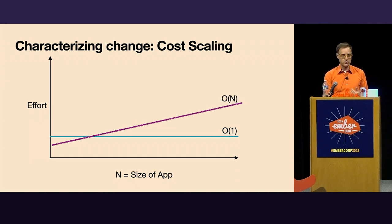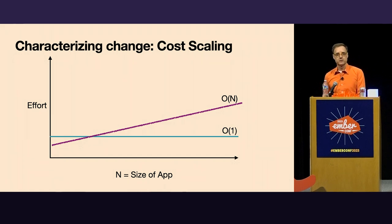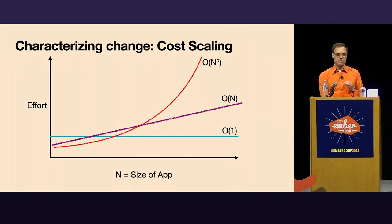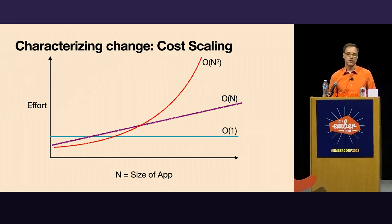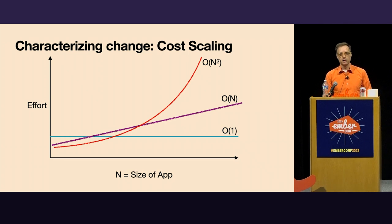But a lot of changes cost more than that and don't scale at constant — they scale linearly. This is the kind of change where if you have a big application full of Ember components and want to change them all to Glimmer components, your cost scales with your application. And there's a worse kind of change: if the change causes subtle differences in interactions between components or between different parts of the system, your cost can go super-linear — N squared or worse. These changes can become completely impossible to do as soon as the app gets beyond a trivial size.